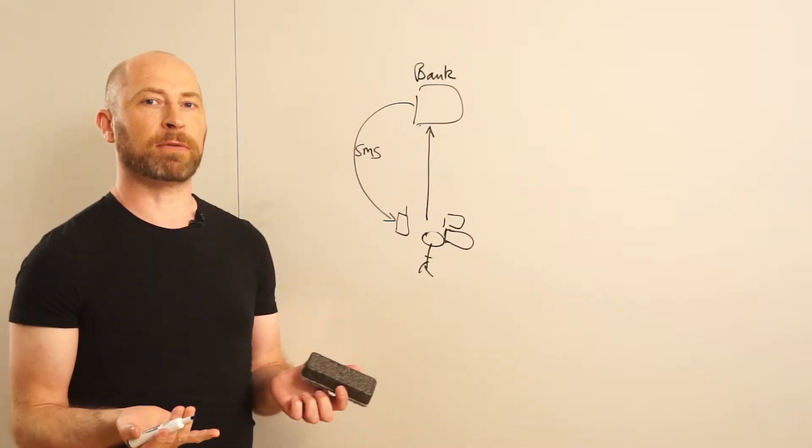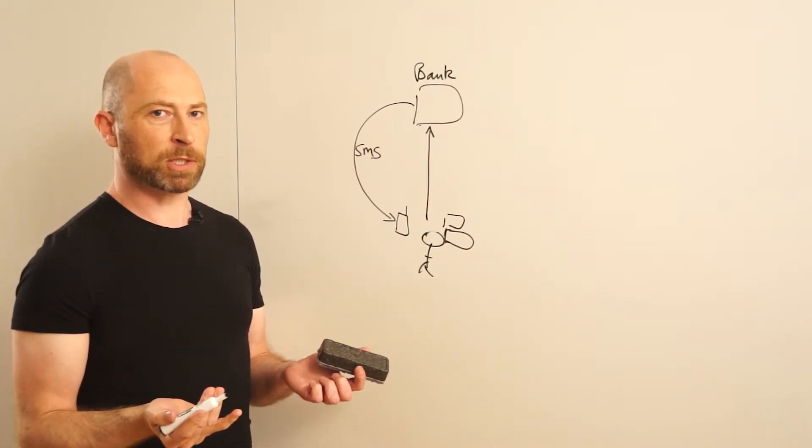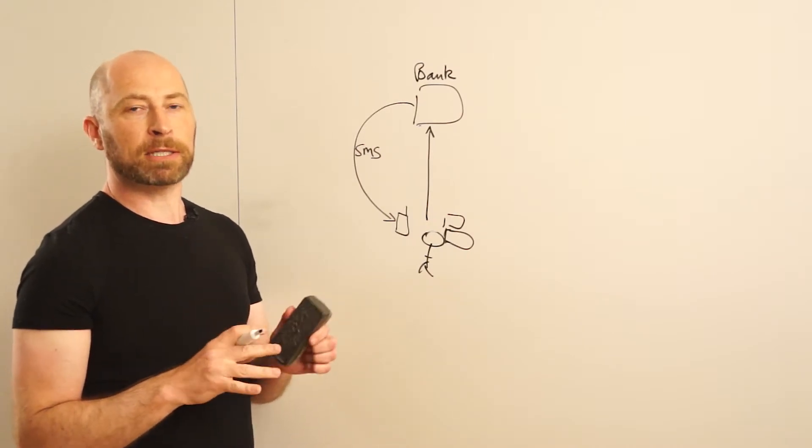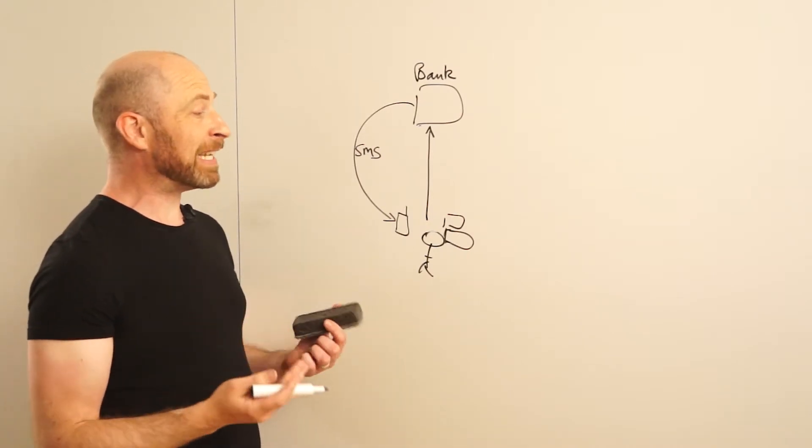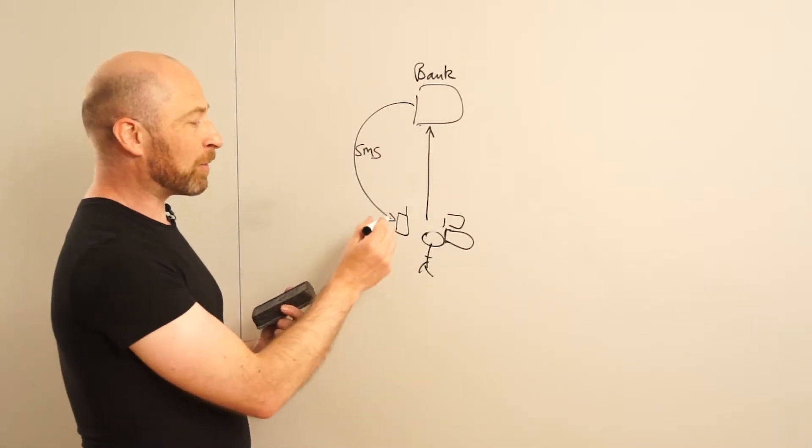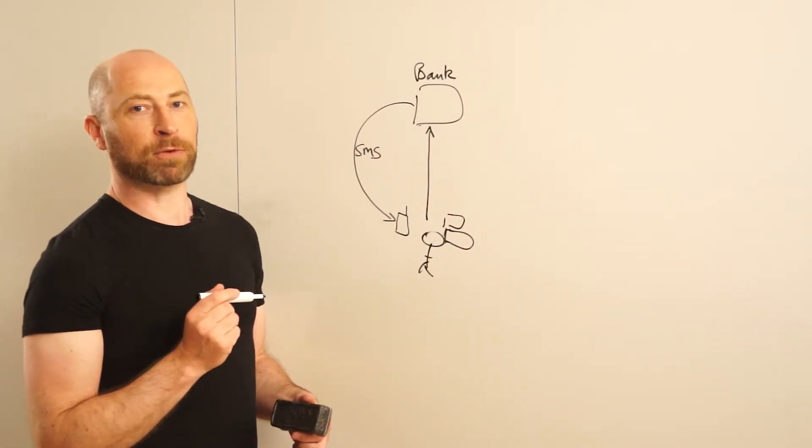And people just think that this is part of their bank's website security procedures. So, they type in their phone model, they type in their phone number, and they're basically giving all of the information to the attacker as to how to intercept their two-factor authentication.